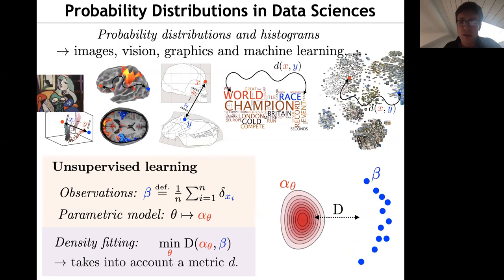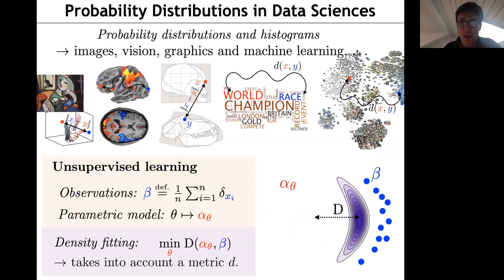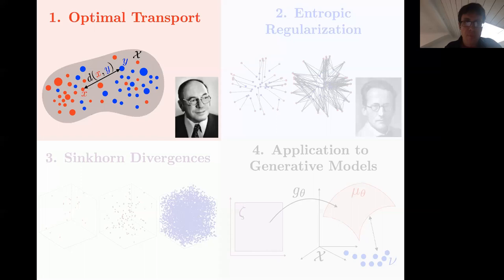Of course this is quite demanding computationally, so I'll explain algorithms that scale to this framework. There are also statistical efficiency issues in high dimension — what is the error you make when you discretize your problem? I want to challenge these two questions: speed and statistical performance.